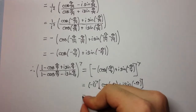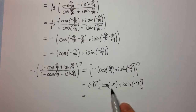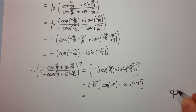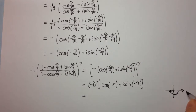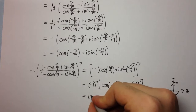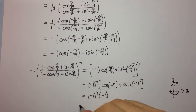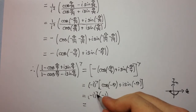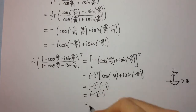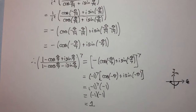Now, cos(−π) plus i·sin(−π) corresponds to going clockwise π radians, landing on −1 on the real axis. So cos(−π) + i·sin(−π) = −1. We then have (−1) times (−1)⁷ times (−1) = (−1) × (−1) × (−1) = ... more simply, (−1)⁷ = −1, and multiplying by the −1 from the complex exponential gives (−1) × (−1) = 1. The answer is simply 1.